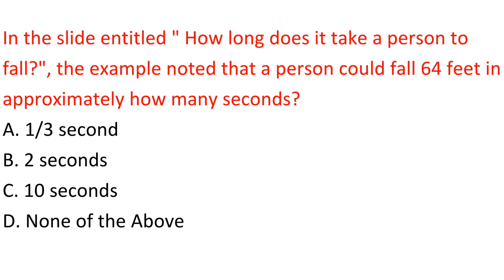Question: In the slide entitled 'How long does it take a person to fall?', the example noted that a person could fall 64 feet in approximately how many seconds? A. One-third second. B. Two seconds. C. Ten seconds. D. None of the above. Answer: B. Two seconds.